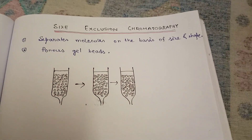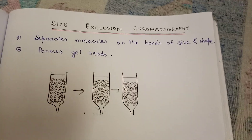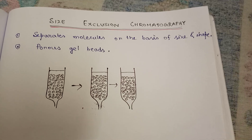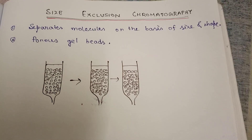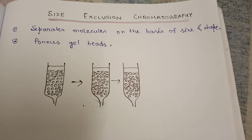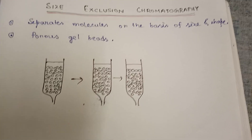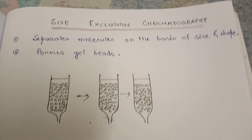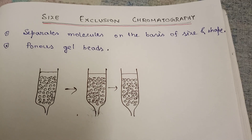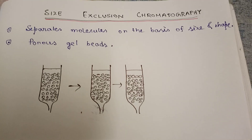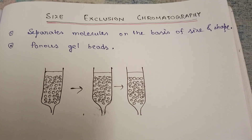Welcome to Biosumi and welcome to this new video in the chromatography series. Today we learn about size exclusion chromatography. The name suggests it separates molecules on the basis of size and shape. It is a non-binding based method — earlier in my previous videos, affinity chromatography was a binding-based method, like antigen binding with antibody or nickel binding with histidine. Here, no binding will occur.